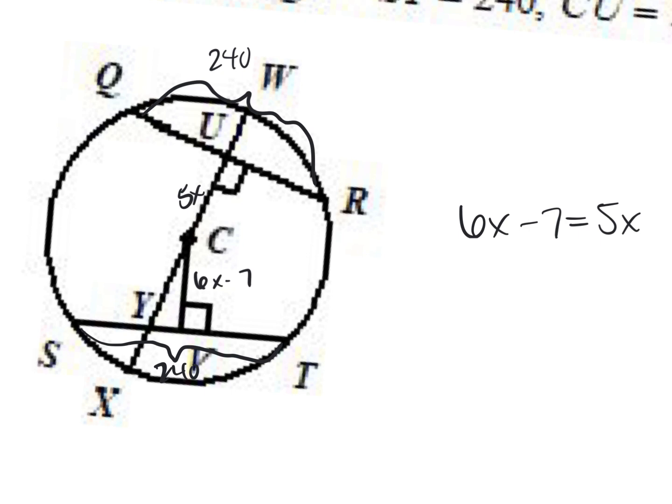I absolutely do need to find x, but why am I able to set those two equal to each other? What about this problem told me those two lengths would be the same? Cody — QR and ST are the same length. So if two chords are the same length, what do I know about the line that creates a 90-degree angle with them? They're going to be the same length — you're on the right track.